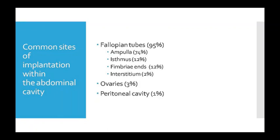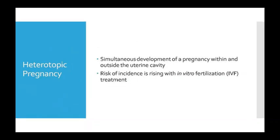Common site kya hai? Fallopian tube mein 95% cases mein ectopic pregnancy dekhi jaati hai — jismein 74% ampulla mein, 12% isthmus mein, 12% fimbrial end par, aur 2% interstitial mein hoti hai. 3% cases mein ovary mein implantation hota hai, aur only 1% mein peritoneal cavity ke andar hota hai.